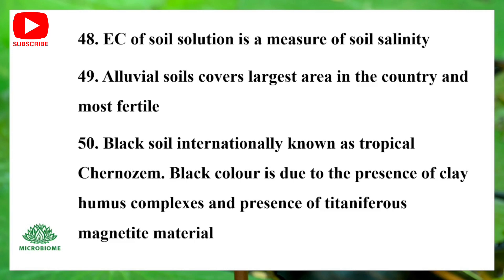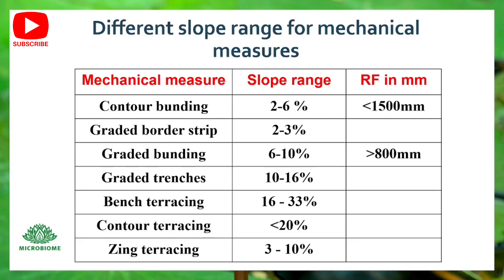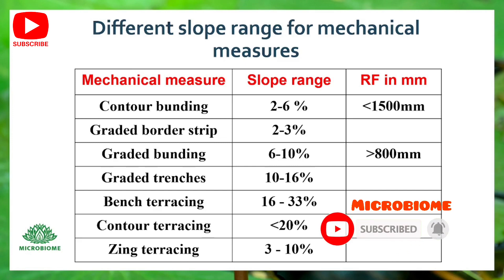ECe of soil solution is a measure of soil salinity. Alluvial soil covers the largest area in the country and is the most fertile. Black soil is internationally known as tropical Chernozem; its black color is due to the presence of clay-humus complexes and titaniferous magnetite material. Slope ranges for mechanical measures: Contour bunding 2–6%, Graded border strip 2–3%, Graded bunding 6–10%, Graded trenches 10–16%, Bench terracing 16–33%, Contour terracing more than 20%, Sink terracing 3–10%.